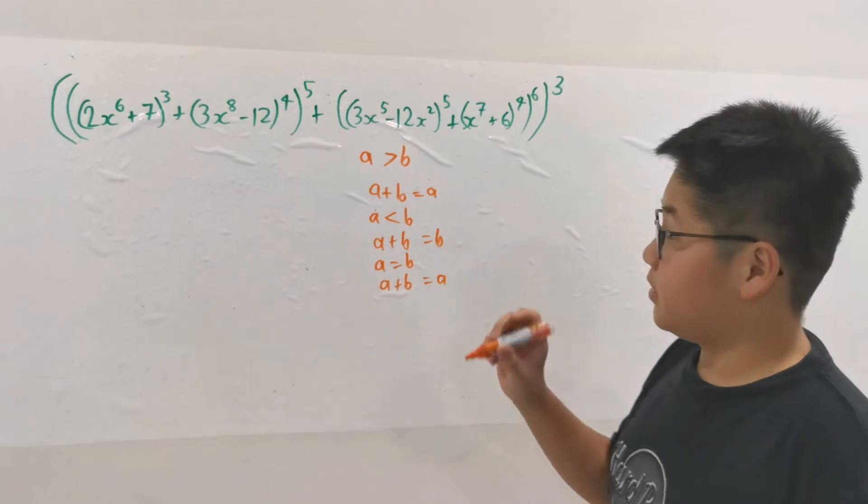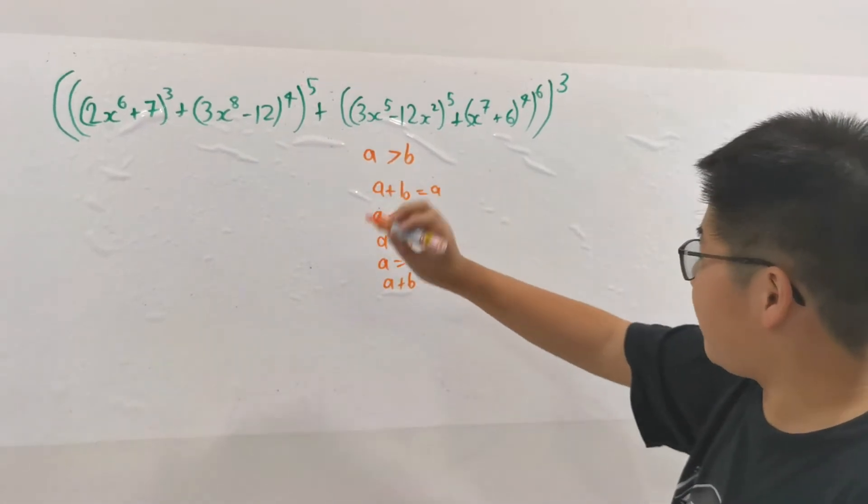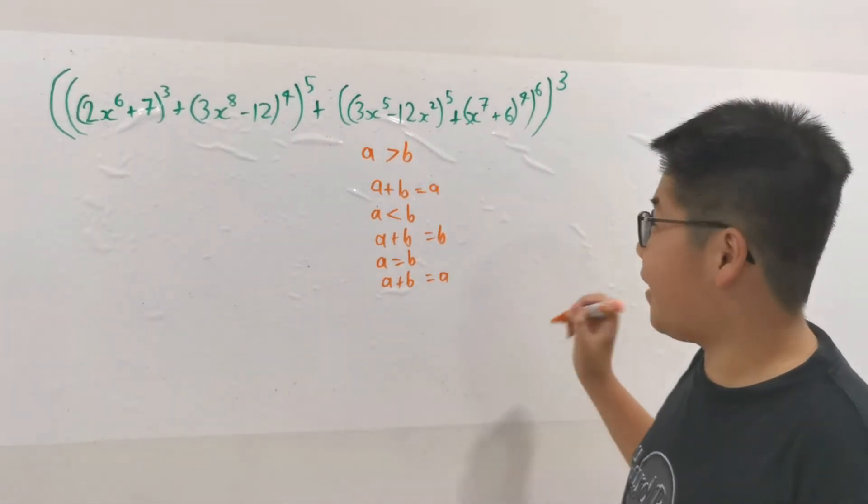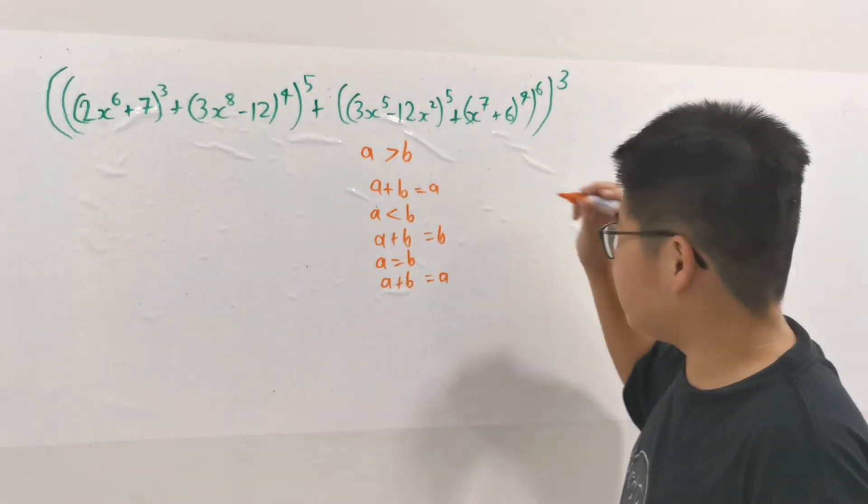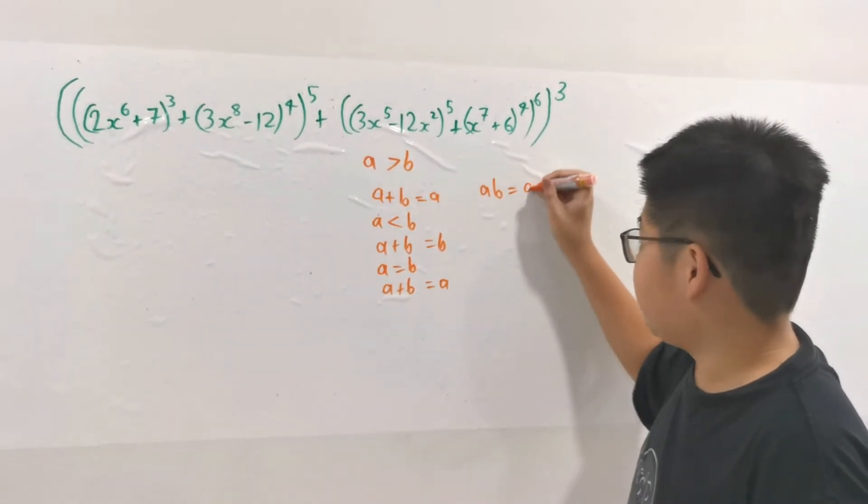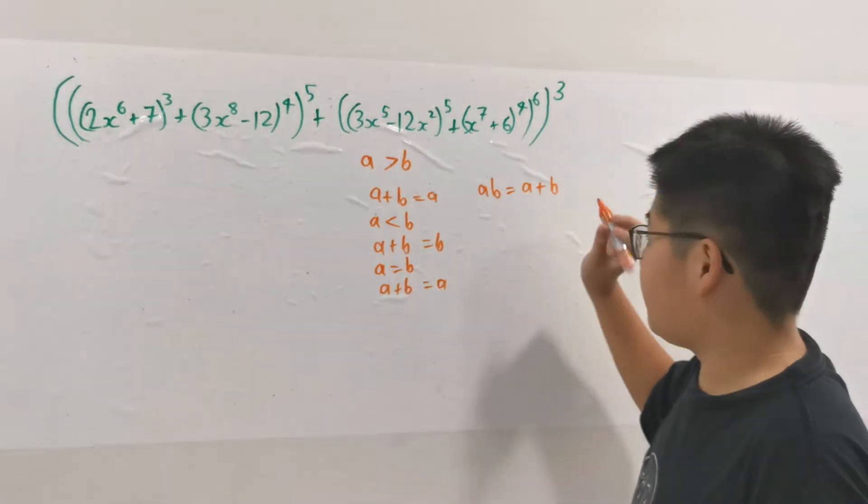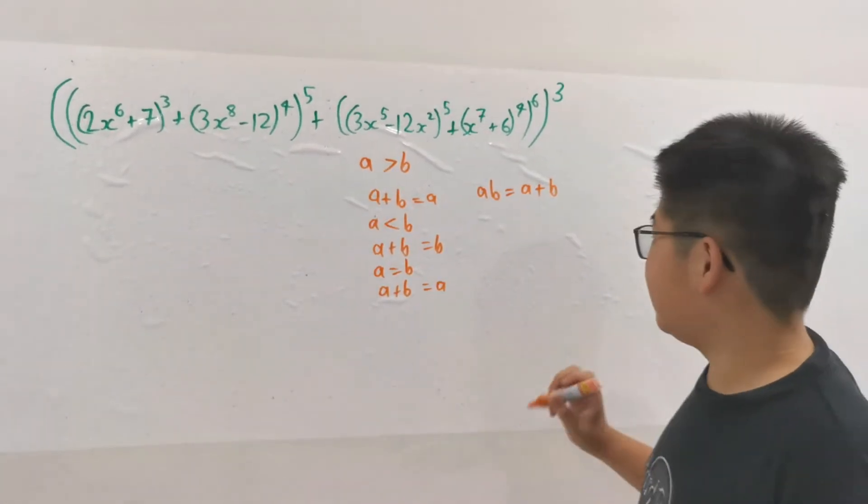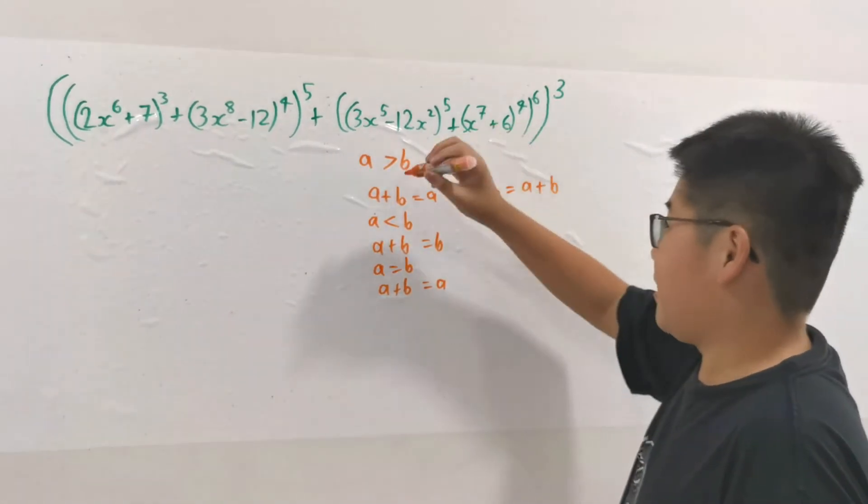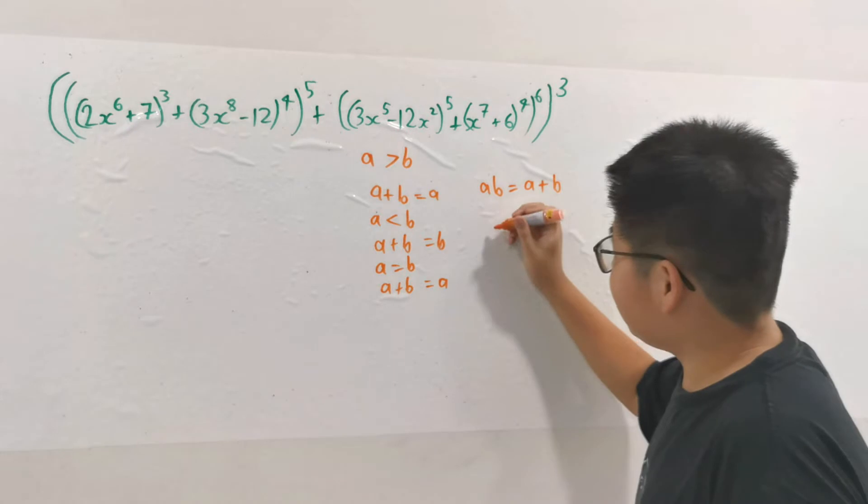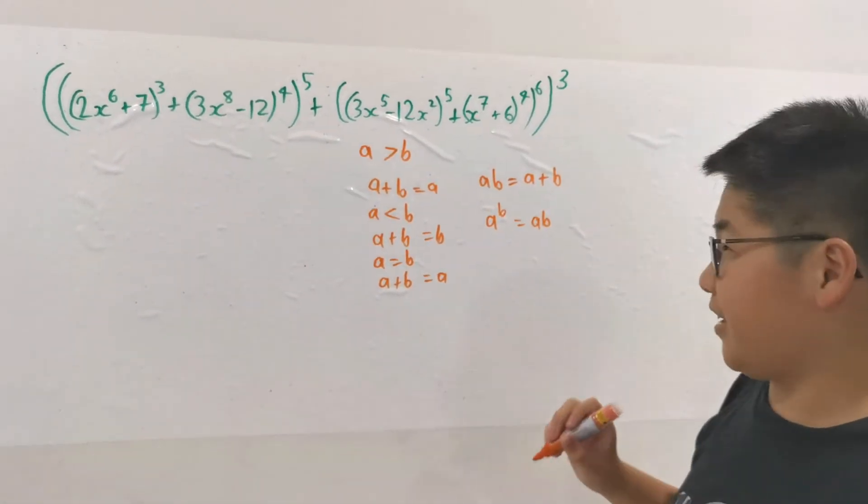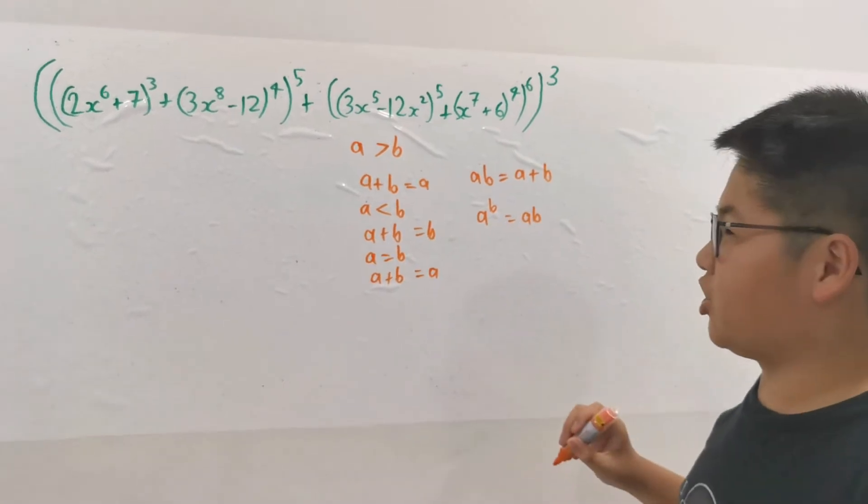We can define multiplication by stating that if you multiply degrees a and b together, it becomes a plus b in normal arithmetic. And if you take a degree to the power of another degree, a to the b equals ab in normal arithmetic. It's basically a step-down version of normal arithmetic.